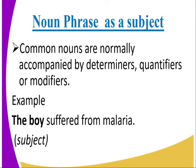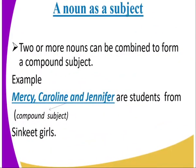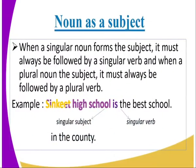Can we look at noun phrase as a subject? Common nouns are normally accompanied by determiners, quantifiers, or modifiers. Example: the boy suffered from malaria — 'the boy' will be our subject. Two or more nouns can be combined to form a compound subject. Example: Mercy, Carolyn, and Jennifer are students from Sinket Girls — so Mercy, Carolyn, and Jennifer are our compound subject.